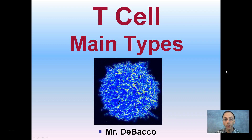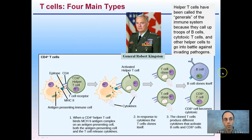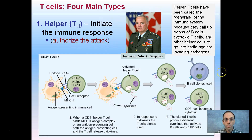Here we're going to specifically look at the four main types of T-cells. The first one is the helper T-cells, which initiate the immune response. They are the ones that authorize the attack.